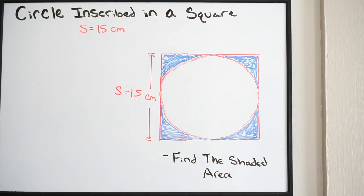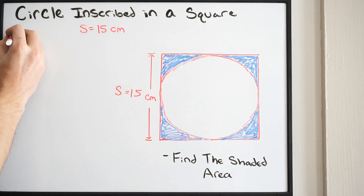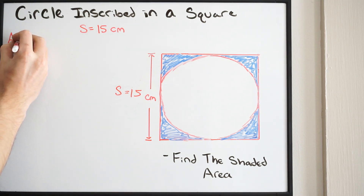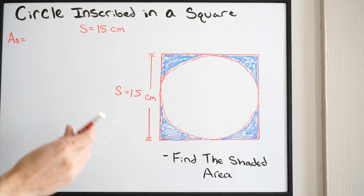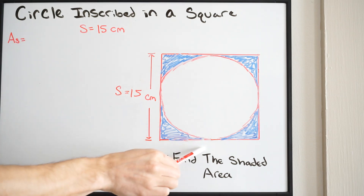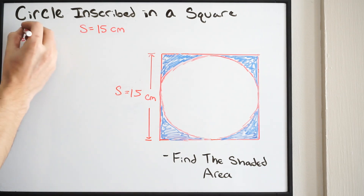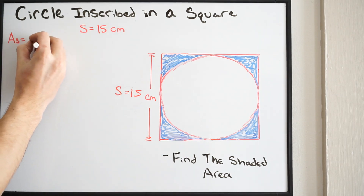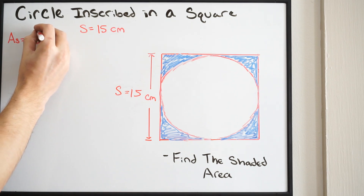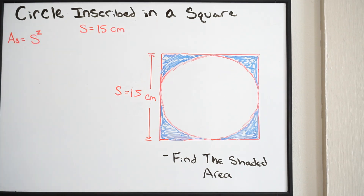So let's find the area of our square. The area of a square is side times side, or S squared. So that's the area of our square.